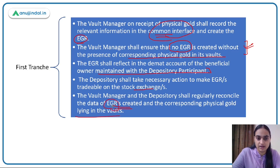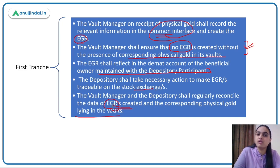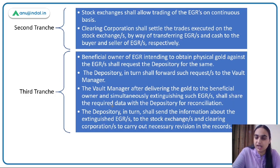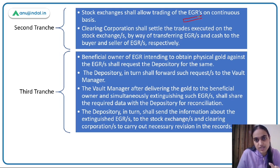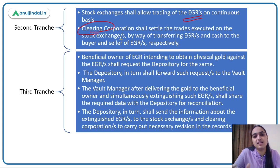In the second tranche, EGRs are traded on existing or new stock exchanges in a new segment. The clearing corporation handles clearing and settlement — delivering securities to buyers and money to sellers. Transferring EGRs is the role of the clearing corporation.